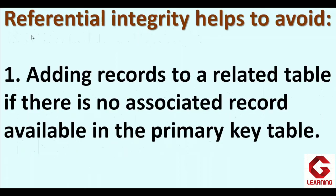Referential integrity avoids three things. First, it prevents adding records to a related table if there is no associated record available in the primary key table. This means if a record is not available in the parent table, we cannot enter that record into the table containing the foreign key. I will demonstrate this practically using the relationship I just established.